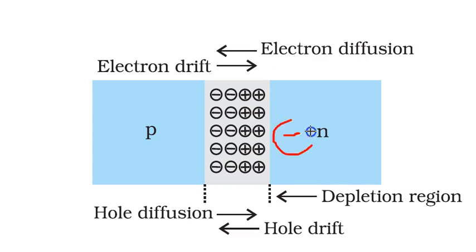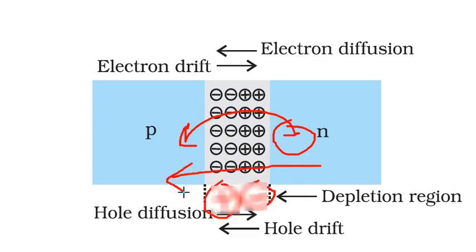What if some electrons from this region are still able to jump into P? It will result in one more fixed ion here and the electric field in this direction increases.